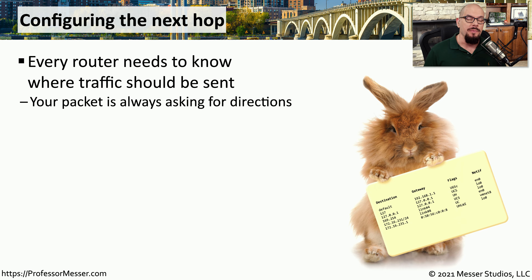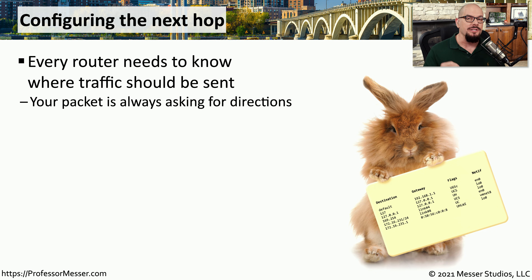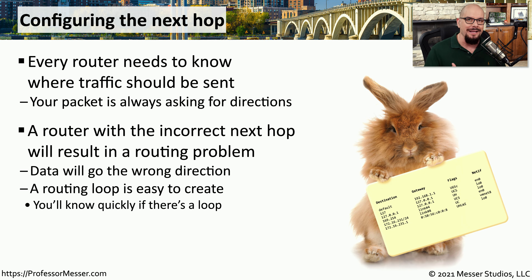When you're configuring a router, you may be setting it up for a dynamic routing protocol so the router determines what the best routes might be, or you might be configuring this manually with static routes and tell the router where the destination should be. Every router needs to be configured with some type of routing table so inbound communication knows where to go as its next hop. A router that's not configured properly or has an incorrect next hop will send traffic down the wrong part of the network, or may create a routing loop where traffic bounces back and forth until discarded.